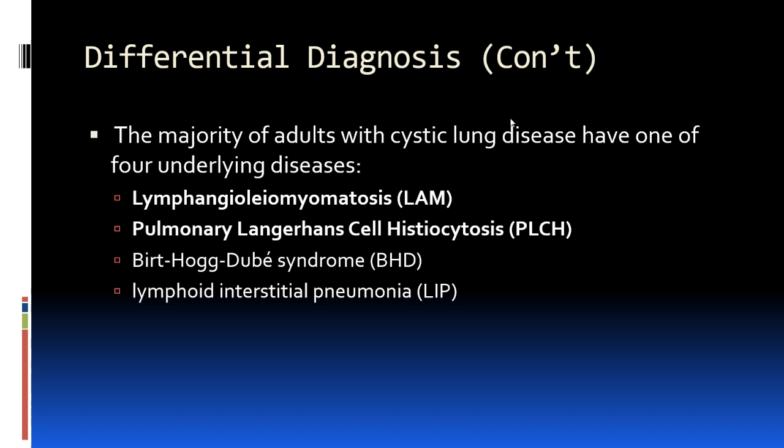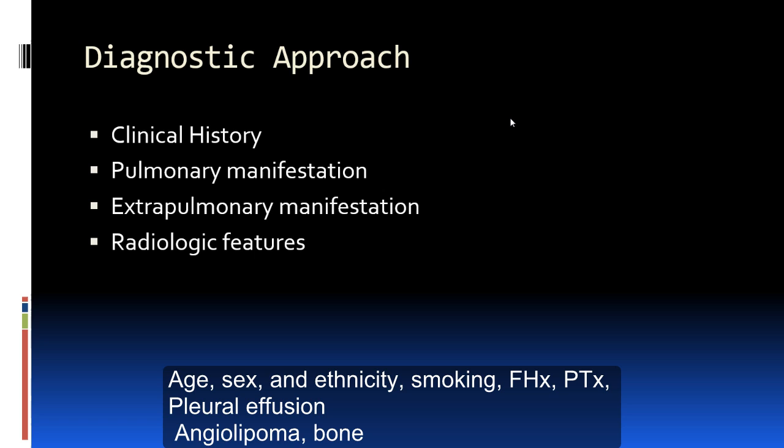For the majority of cystic lung disease in adults, there are usually four underlying disease processes: lymphangioleiomyomatosis (LAM), pulmonary Langerhans cell histiocytosis (PLCH), Birt-Hogg-Dubé syndrome, which has a characteristic skin rash, and lymphoid interstitial pneumonia. Due to time restrictions, today I will focus on LAM and PLCH.